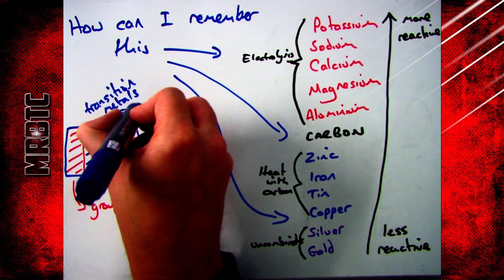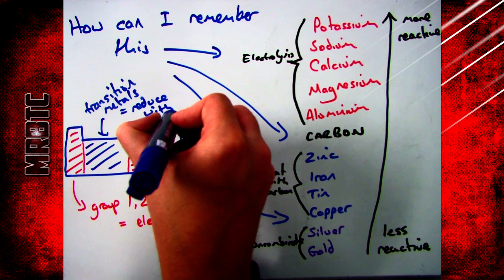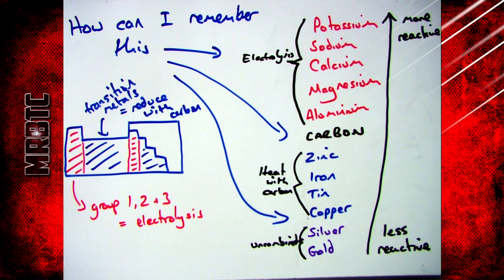All you need to remember is that silver and gold are found uncombined. Stuff in the transition metals reduce with carbon, and then groups one, two, and three use electrolysis.